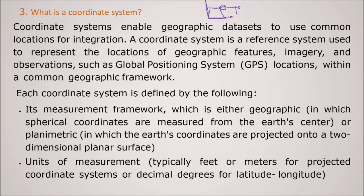So coordinate system enables geographic data sets to use common location for integration. A coordinate system is a reference system used to represent the location of geographic features, imageries and observation. For example, GPS locations within a common geographic framework. So each coordinate system is defined by, first its measurement framework which is either geographic in which these spherical coordinates are measured from the earth center or the planimetric in which the earth coordinates are projected onto a two-dimensional planar surface.